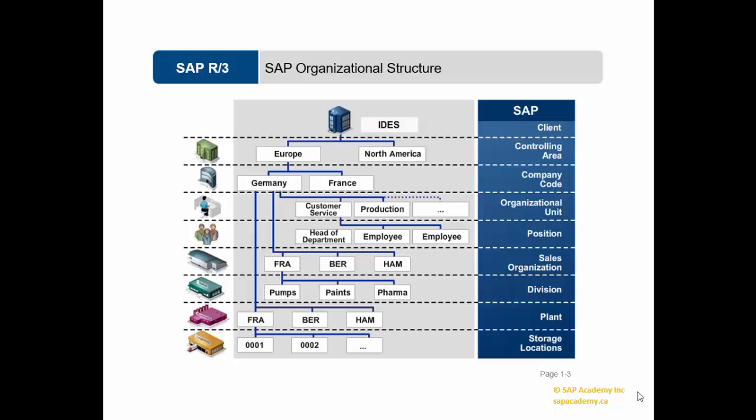There are three types of structures in SAP: enterprise structure, personnel structure, and organizational structure. There are four main components of the enterprise structure in the SAP system: client, company code, personnel area, and personnel sub area. Client and company code we now understand. Let's try to understand what personnel area and personnel sub area are.